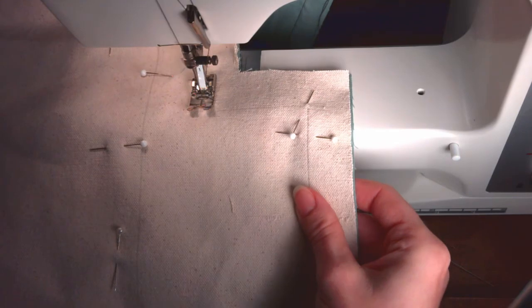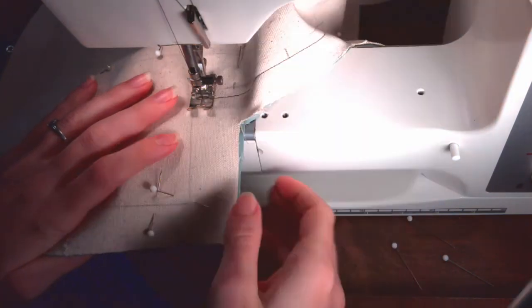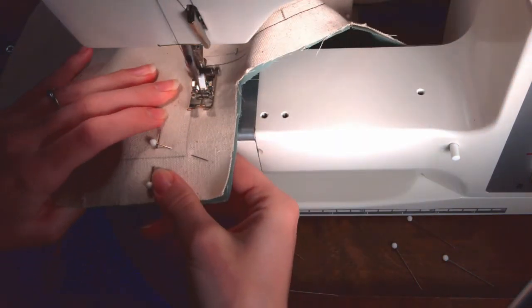When you near the corner, you may want to stop and walk the machine for the last couple of stitches. When you have reached a quarter inch from the corner, with the needle down, lift the presser foot, turn the corner, put the presser foot back down, and continue sewing until the edge of the fabric.